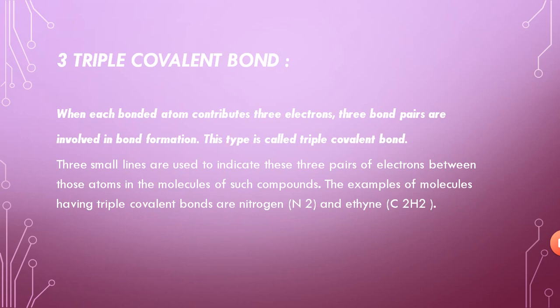How are triple covalent bonds formed? When each bonded atom contributes three electrons towards the other, forming three shared electron pairs, this makes the dot-and-cross formula showing a triple bond. This is indicated by three lines — an upper, middle, and lower line — showing the electrons shared by the valence shells. Examples of these molecules are nitrogen (N₂) and ethyne, both of which form triple covalent bonds.